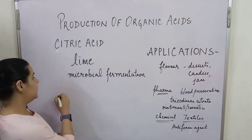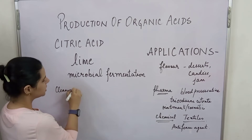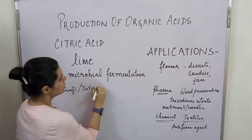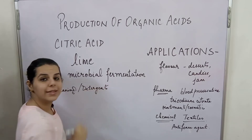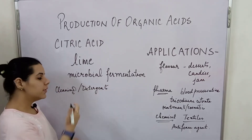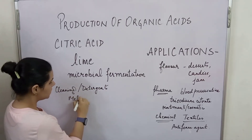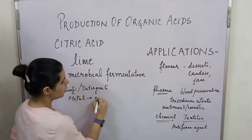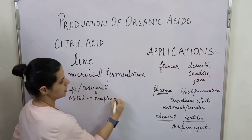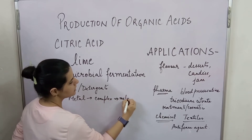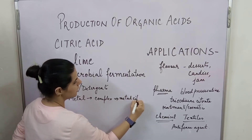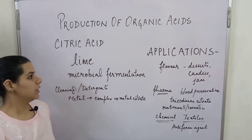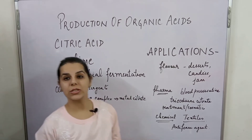We can also talk about the cleaning industry, where citric acid is used in detergents. In addition, in the metal industry, citric acid forms complexes with metals, and these are called metal citrates.